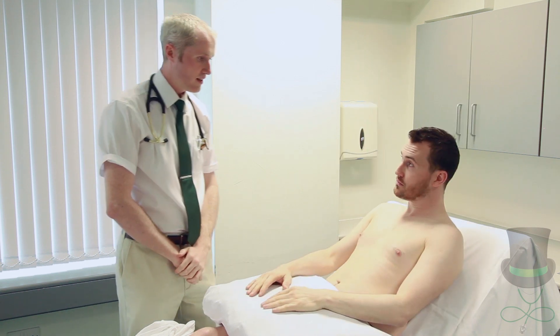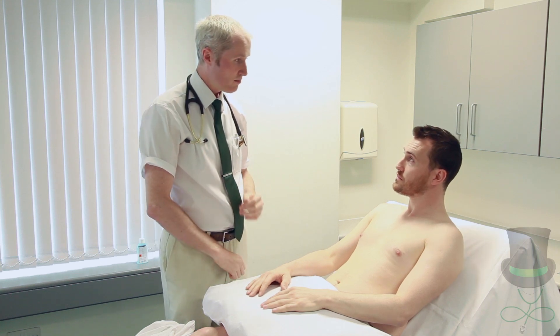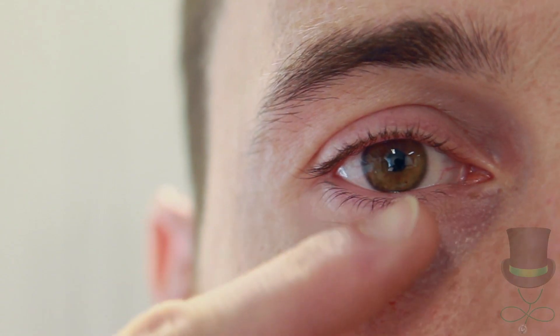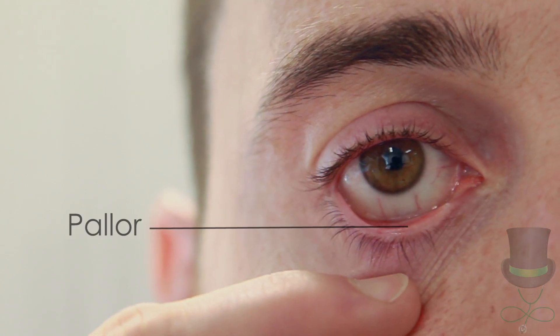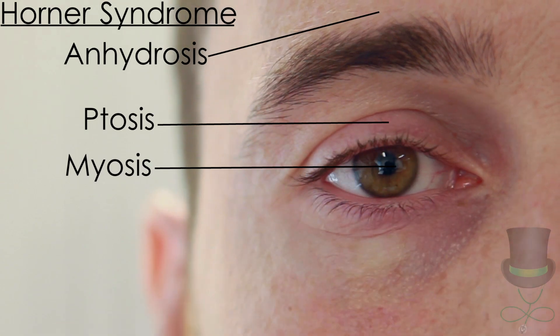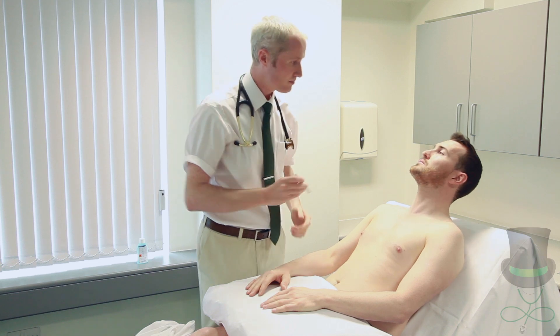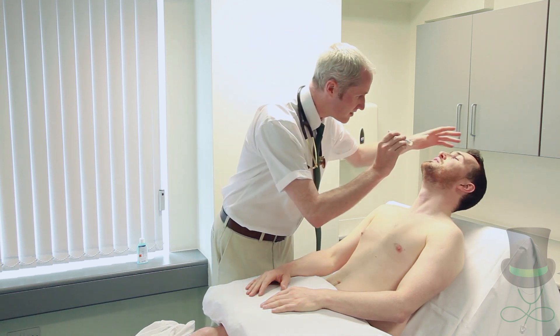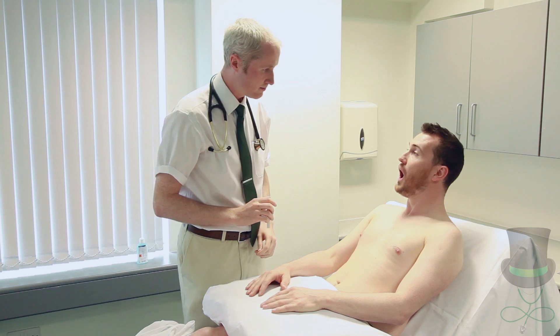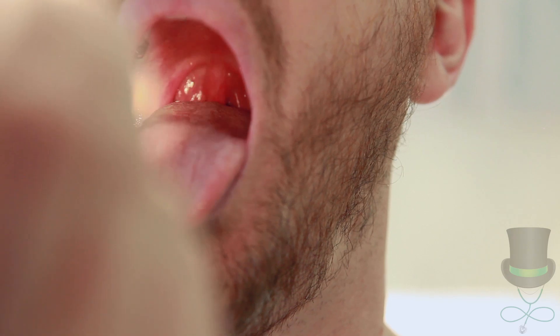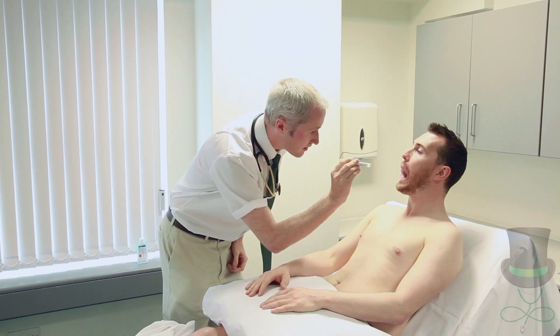I'm just going to have a little look at your face, if that's okay. The eyes are examined for conjunctival pallor and signs of Horner syndrome. Can I get you to tilt your head back? Using a pen torch, inspect the nostrils for polyps, engorged turbinates or a deviated septum. And can I get you to open your mouth? Look around the patient's mouth and then ask them to open it. Note any peripheral or central cyanosis and comment on the patient's dentition. Put your tongue back in and show me the base of your tongue.